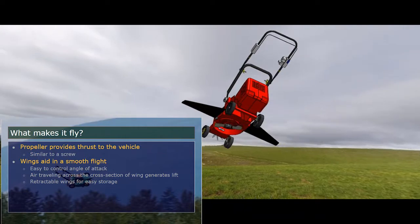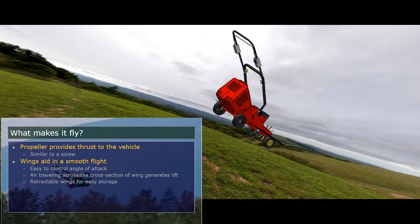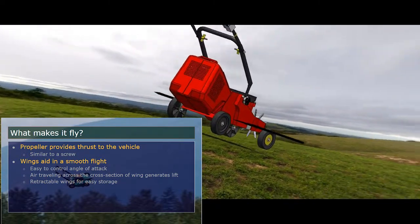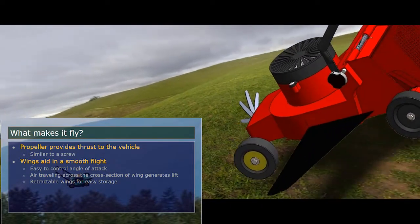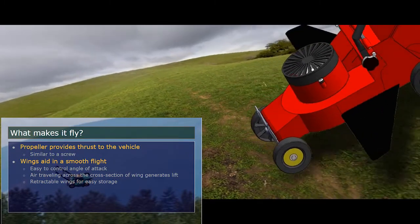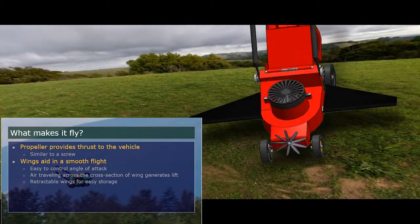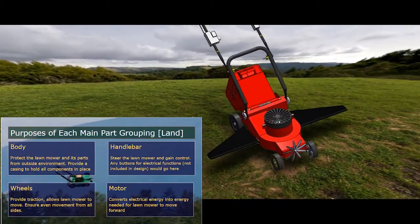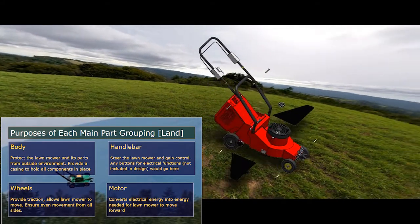The wings of our lawnmower are not only retractable, but the same function can also be used to control the angle of attack. The air traveling across the cross-section of the wing will generate lift in order for this lawnmower to fly. You will notice that the propeller is also screwed into the front. The wheels of the lawnmower are able to provide it traction and allows the lawnmower to move. It also ensures even movement from all of the sides.